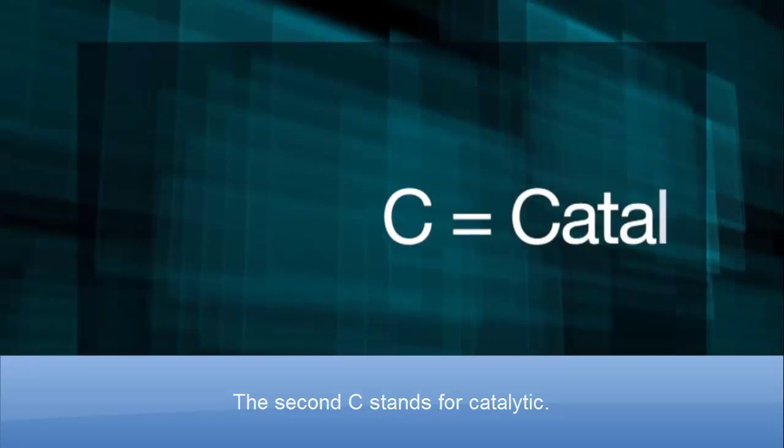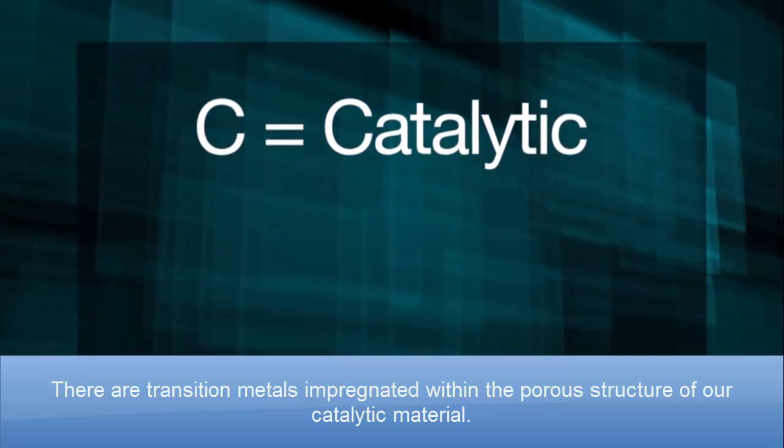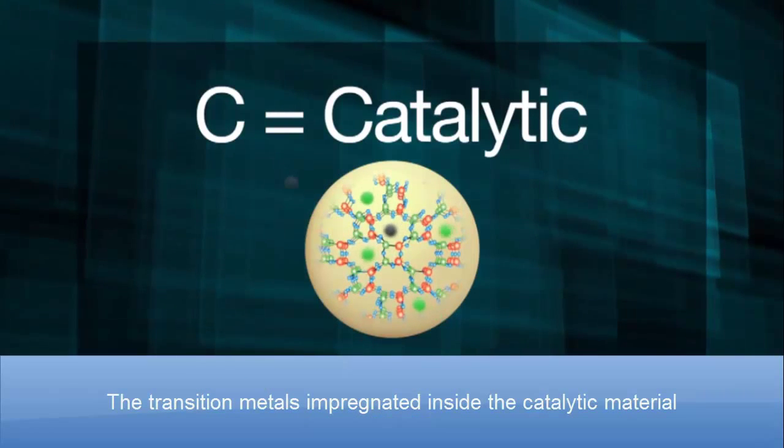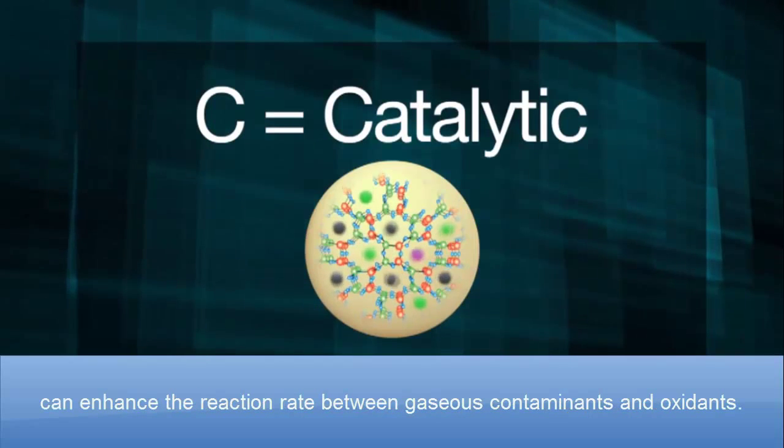The second C stands for catalytic. There are transition metals impregnated within the porous structure of our catalytic material. The transition metals impregnated inside the catalytic material can enhance the reaction rate between gaseous contaminants and oxidants.